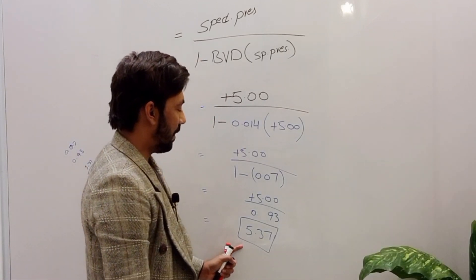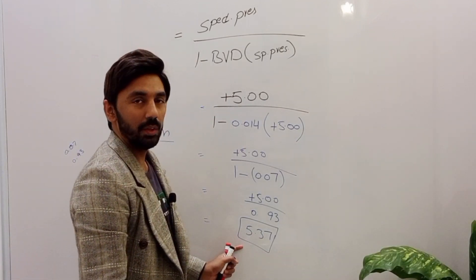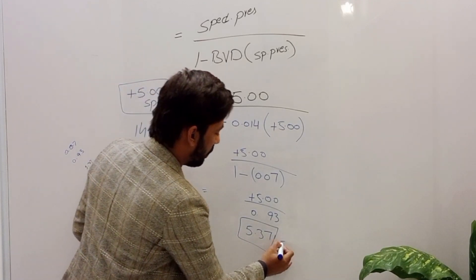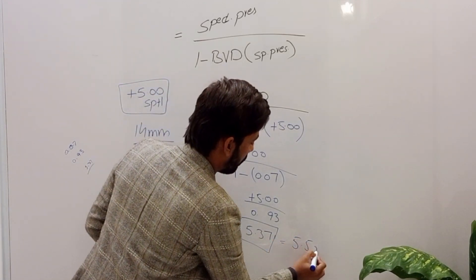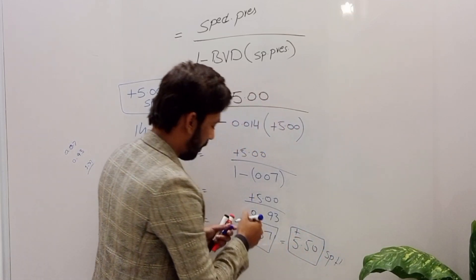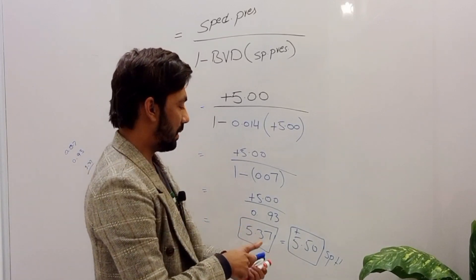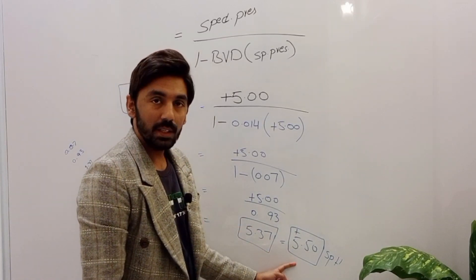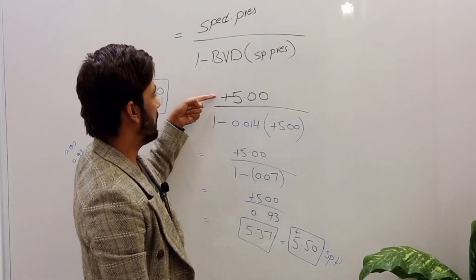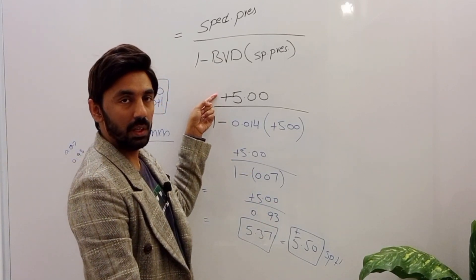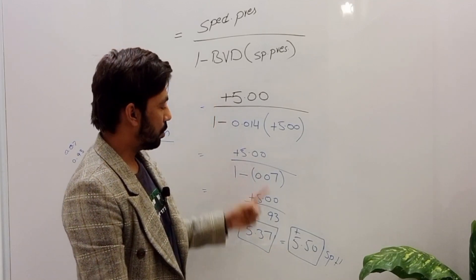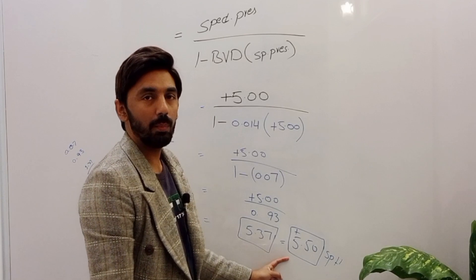Finally, dividing plus five by 0.93 gives 5.37. Since 5.37 is not available in standard contact lens powers, we round it to plus 5.50. So plus 5.50 is the precise contact lens prescription for this patient.